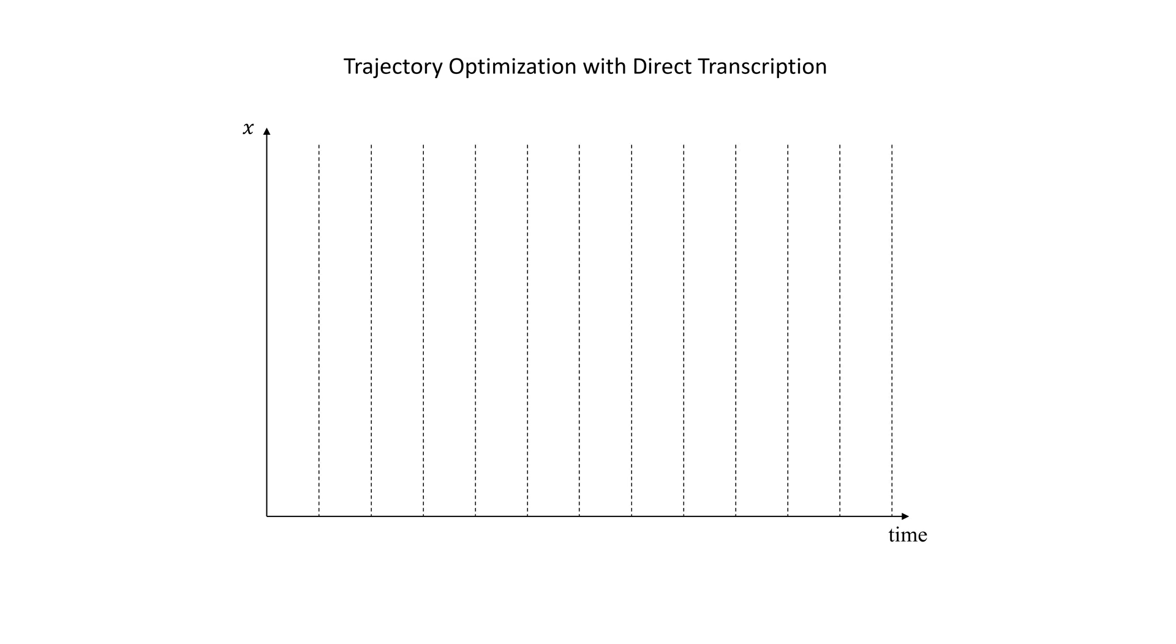It splits the trajectory into segments and represents the state of the robot at the beginning of each time segment. It also represents the control inputs which determine the evolution of the robot's state during that interval.